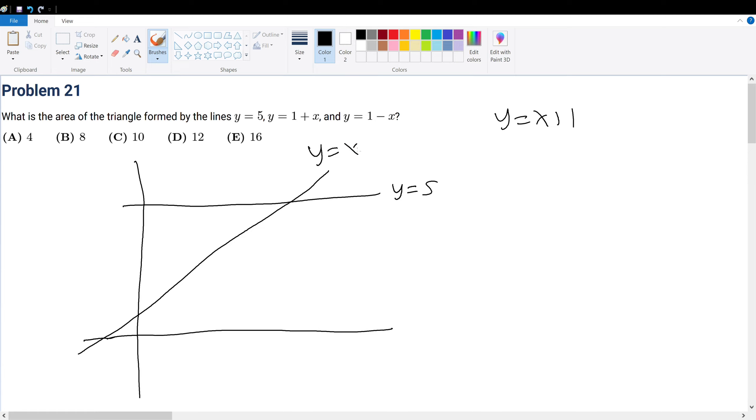You also have y = -x + 1. Well, that's just y = -x, which is this line right here, but then you shift it up by 1. So we have to extend it out, so it must look something like this.